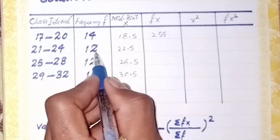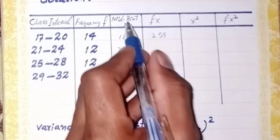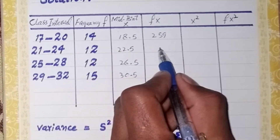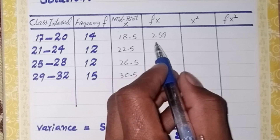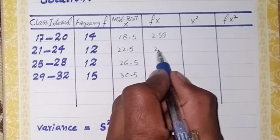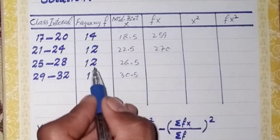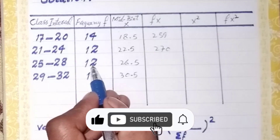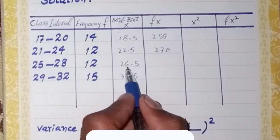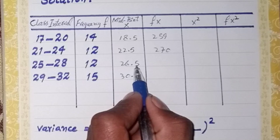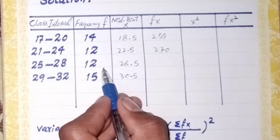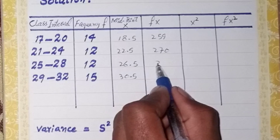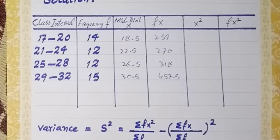In the second row, the f value is 12 and the x value is 22.5; we multiply both and the fx value is 270. For the third row, the f value is 12 and the x value is 26.5; we multiply both and the fx value is 318.